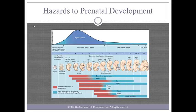Damage from teratogens during the fetal period are usually minor; however, organs such as the brain, ears, eyes, teeth, and genitals can still be affected.